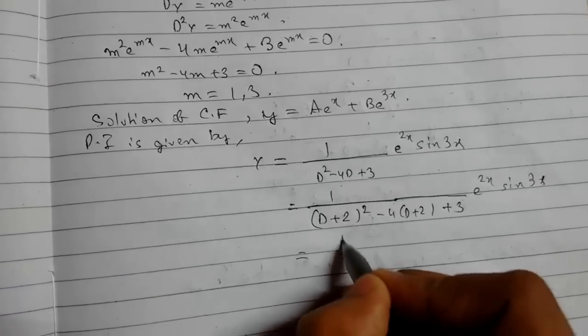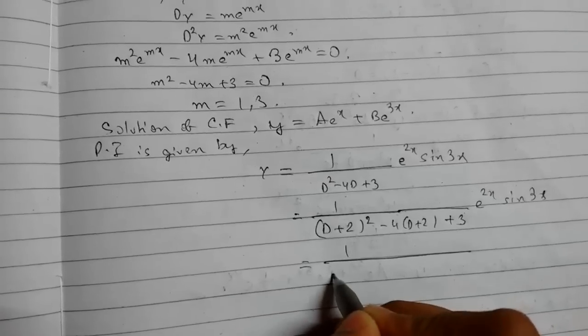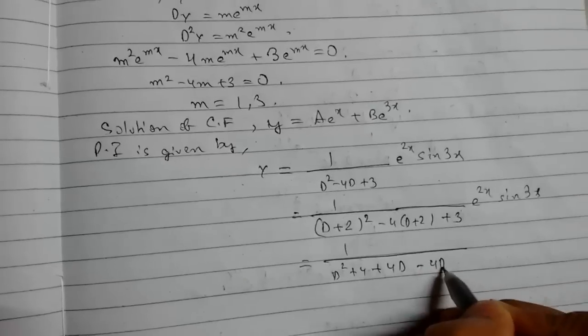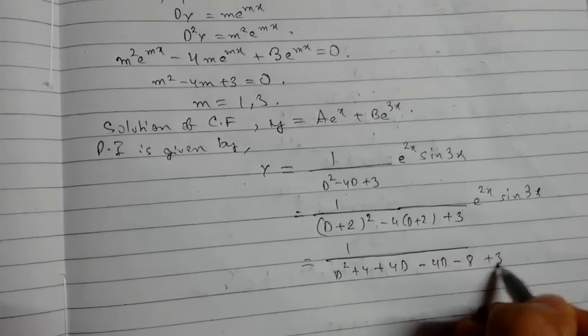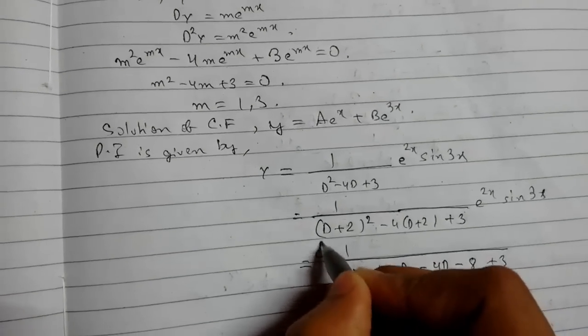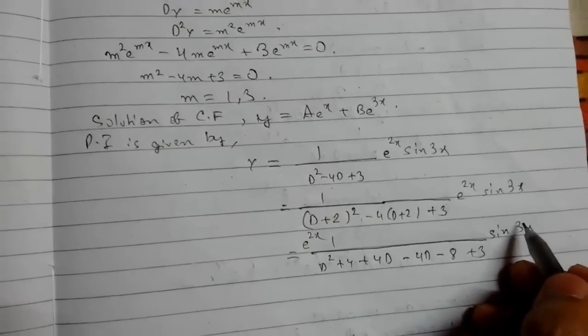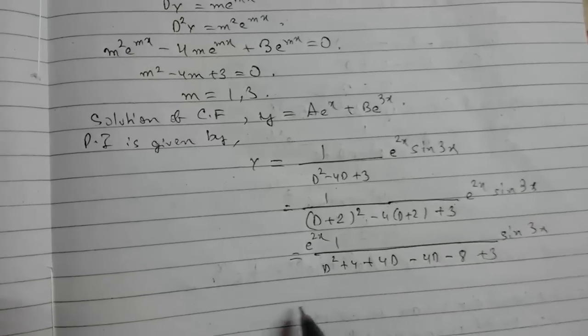So this will be D² + 4 + 4D - 4D - 8 + 3. So e^(2x) has already been operated. Now it is outside. So we will only operate on sin(3x) and the denominator part.